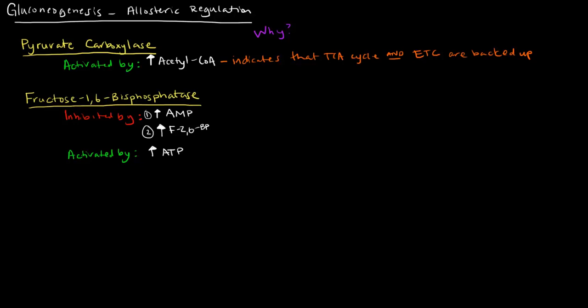So what is high levels of AMP? This indicates low energy, a low energy state. If we have low energy, then we want to make sure we're making energy.